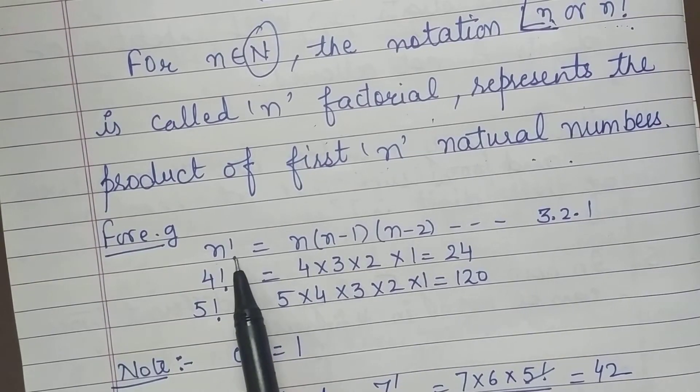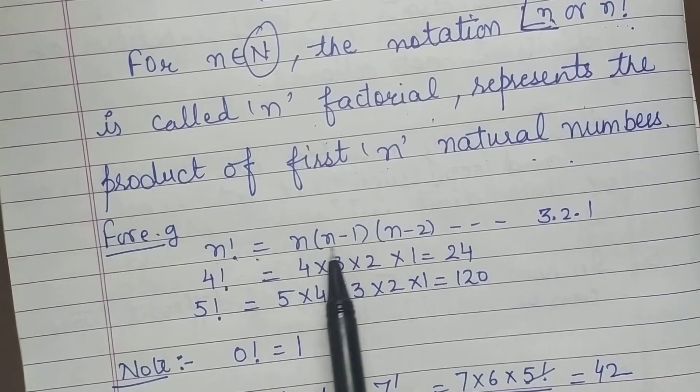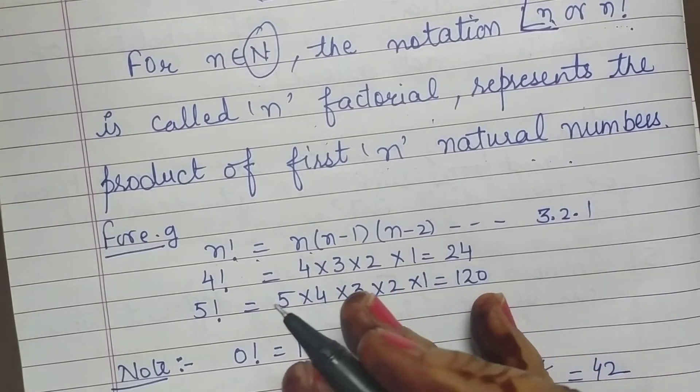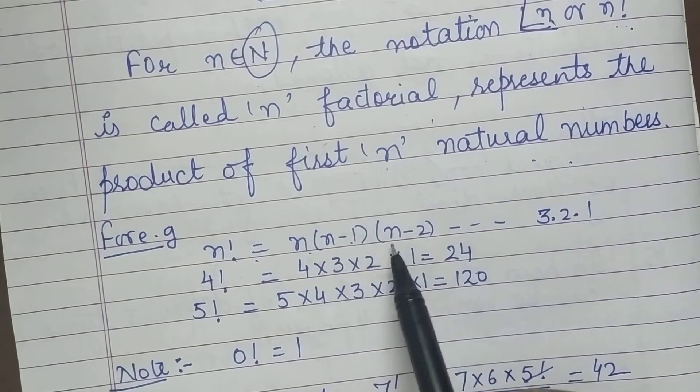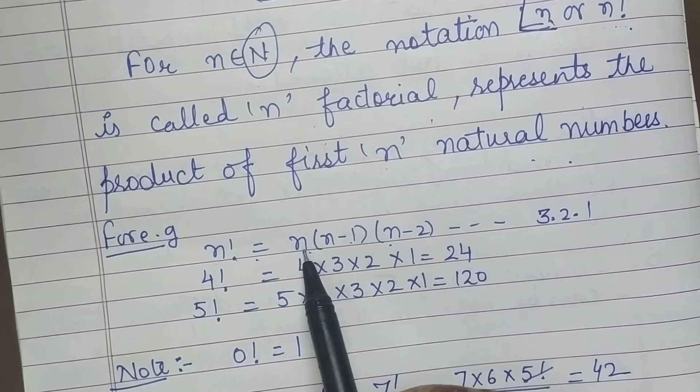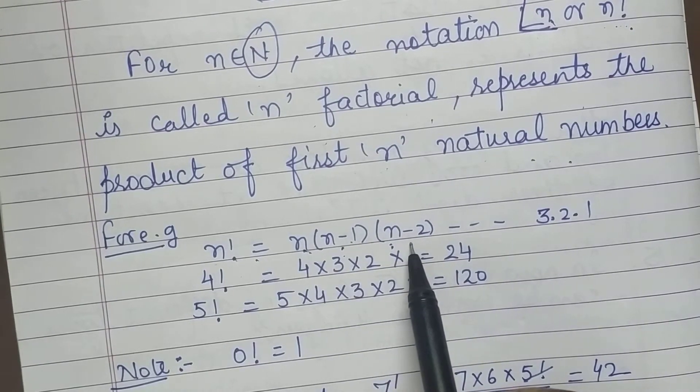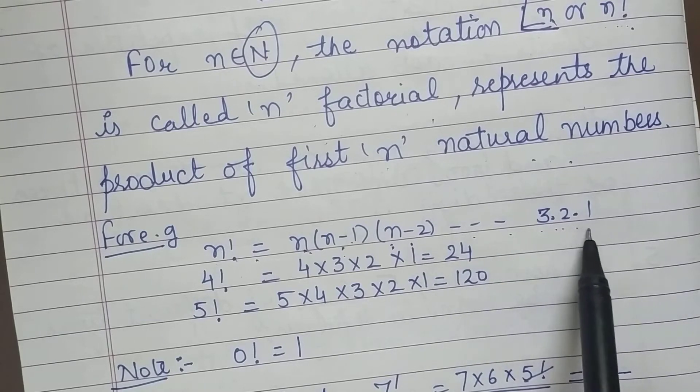What is factorial? It is a new concept introduced. N factorial is the product of first n natural numbers. For example, I will take n factorial. What is n factorial? You can see n, go on decreasing by 1. First what happens? N, then n minus 1, then decrease further n minus 2, up to 3, 2 and 1.